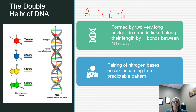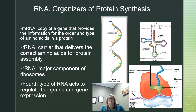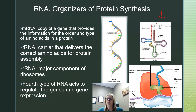DNA is like our original that we keep locked up tight in a safe, and RNA is basically like a copy. We have different types of RNA: mRNA, tRNA, and rRNA. RNA is single-stranded and uracil replaces thymine. mRNA — messenger RNA — is a copy of a gene that carries the information for the order and type of amino acids in a protein. tRNA — transfer RNA — goes and gets the amino acids together for protein assembly. rRNA — ribosomal RNA — is the major component of ribosomes. Other types of RNA act to regulate genes and gene expression.